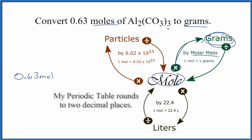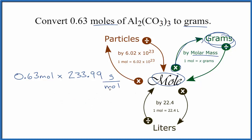When we find the molar mass for aluminum carbonate, we get 233.99 grams per mole. The units for molar mass are grams per mole.